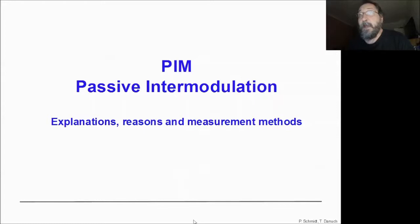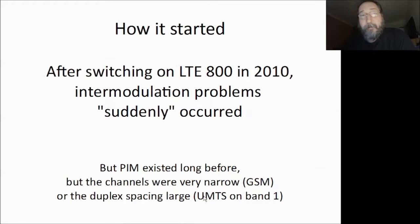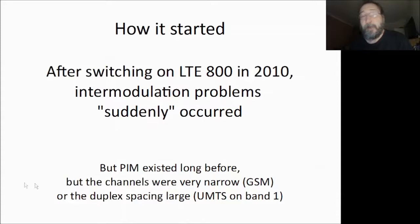It started suddenly in approximately 2010 when LTE 800 was switched on, since the network providers saw some problems caused by passive intermodulation. But passive intermodulation PIM is much older. In GSM we had very narrow channels, so often the mixing products fall between two traffic channels and don't cause any problems in the uplink. In UMTS we had a very wide duplex spacing between uplink and downlink, so passive intermodulation was very rare in 3G European bands.